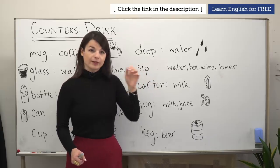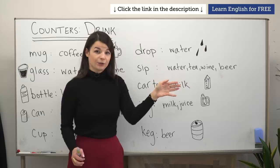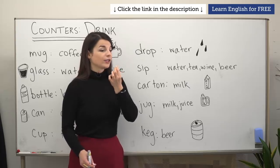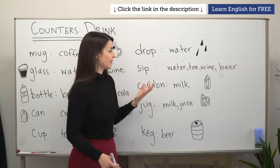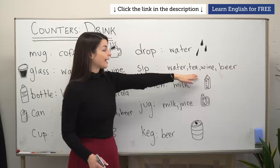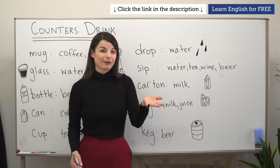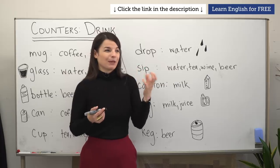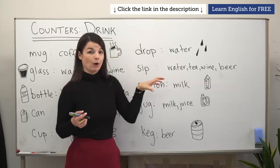Next one is sip. Sip refers to a small taste of liquid. So if you want to try a drink, you can say, for example, 'Can I have a sip of tea?' or 'Can I have a sip of your wine?' — meaning just a small taste. We can say 'I need a sip of water' or 'she took a big sip of beer.' We could say a big sip to make an interesting phrase, though usually sip means just a small quantity.